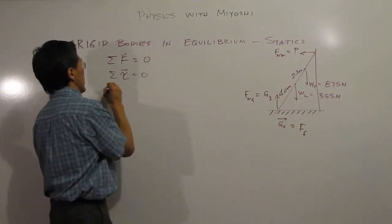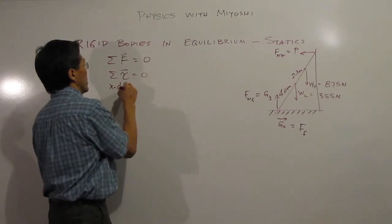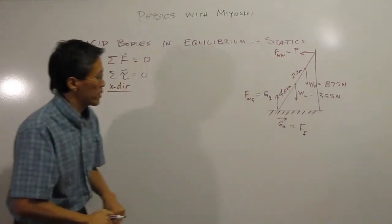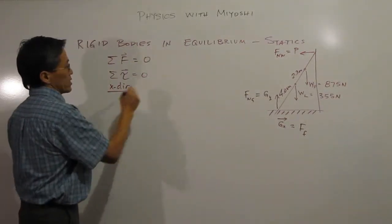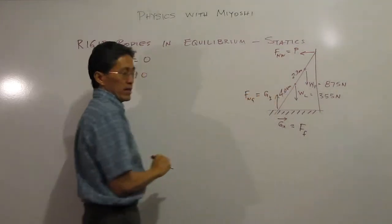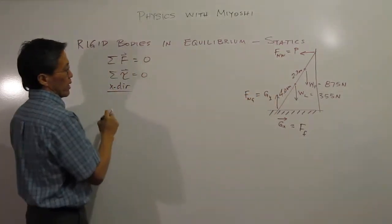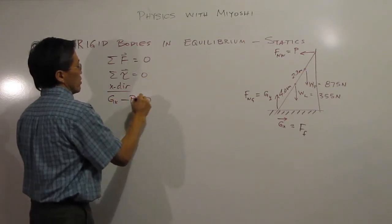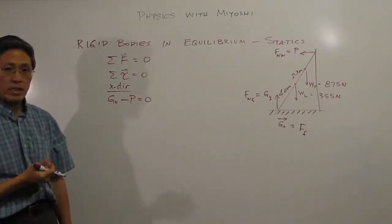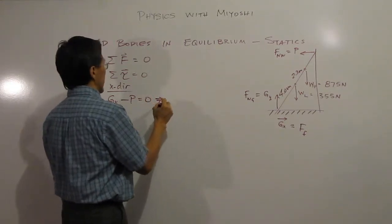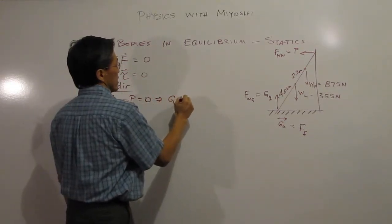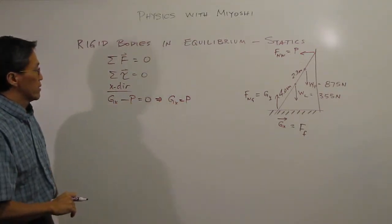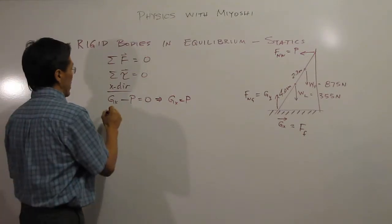In the x-direction, we have two forces: GX and P. Calling rightward positive, GX minus P equals zero, which means GX equals P. So once we find P, we automatically know GX.